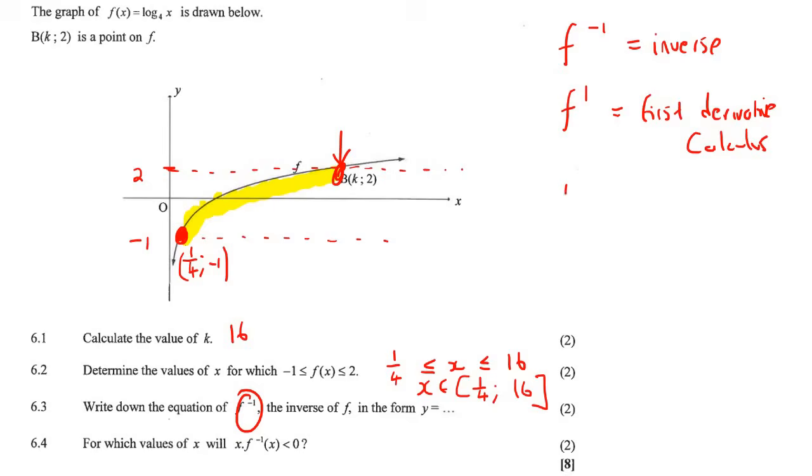So to find the inverse, you just write out the original equation. You then switch x and y around. And then you get y by itself again. So we're going to reverse log again. That's going to be this one to the power of this one equals to this one. And whether I do it that way or that way doesn't really matter. But there's the answer, y equals 4 to the power of x.